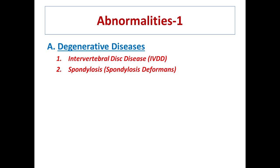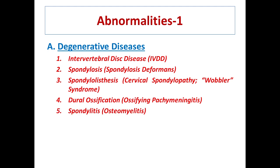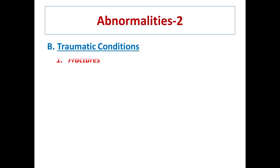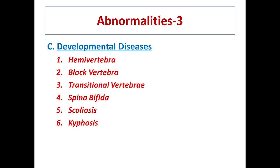Degenerative changes include intervertebral disc displacement, spondylosis, spondylolisthesis, dural ossification, spondylitis, and discospondylitis. Traumatic conditions usually include fractures and dislocation. Developmental diseases will be discussed on another day.